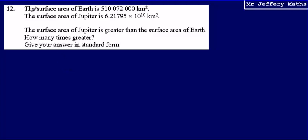This is question 12. Here we're told that the surface area of Earth is 510,072,000 km². We're then told that the surface area of Jupiter is 6.21795 times 10 to the power of 10 km².